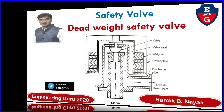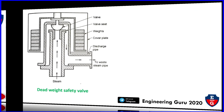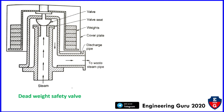Now we will see the dead weight safety valve schematic diagram. It consists of a valve, valve seat, weights, cover plate, discharge pipe, and a waste steam pipe. This is steam.